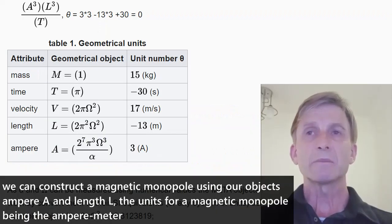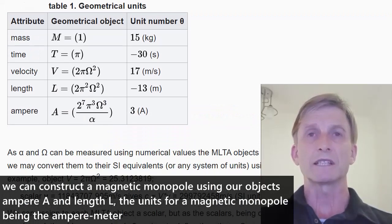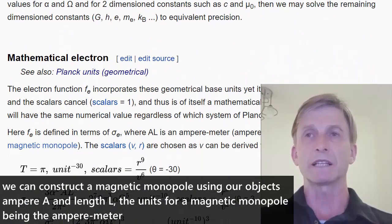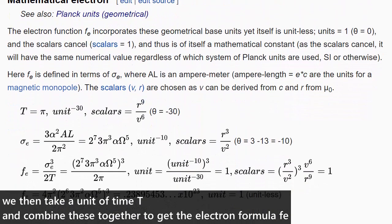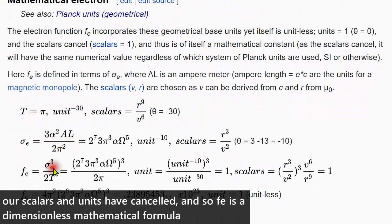We can construct a magnetic monopole using our objects ampere and length. The units for a magnetic monopole being the ampere meter. We then take a unit of time t and combine these together to get the electron formula Fe. Our scalars and units have cancelled and so Fe is a dimensionless mathematical formula.